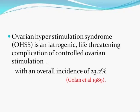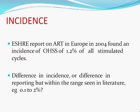Now, if we see the incidence of OHSS as reported in ASRM, it is now 1.2% of all stimulated cycles, so it has reduced drastically. Sometimes reporting is not proper or the incidence may vary from clinic to clinic, so whatever the difference in incidence or reporting, the range has been reported to be 0.1 to 2% overall.